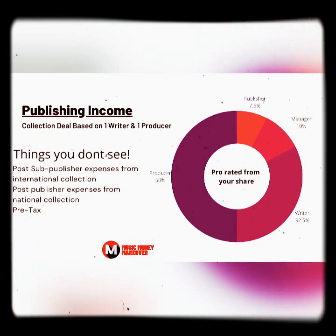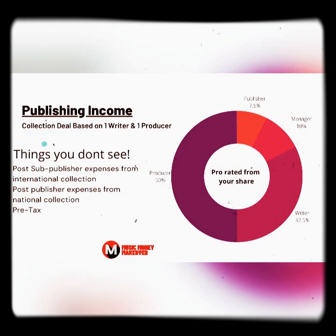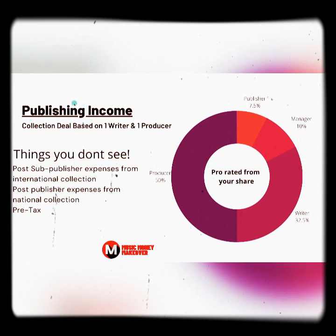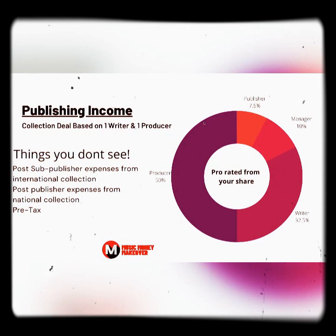Publishing income — this is the first thing we start with. This collection deal income is based on one writer and one producer. For those who don't know, when it comes to publishing, a collection deal is like your SongTrust deal. SongTrust is a publishing company — they usually take 15%, and their deal is called a collection deal. This is my typical 50/50 split: 50% for the producer, 50% for the writer.